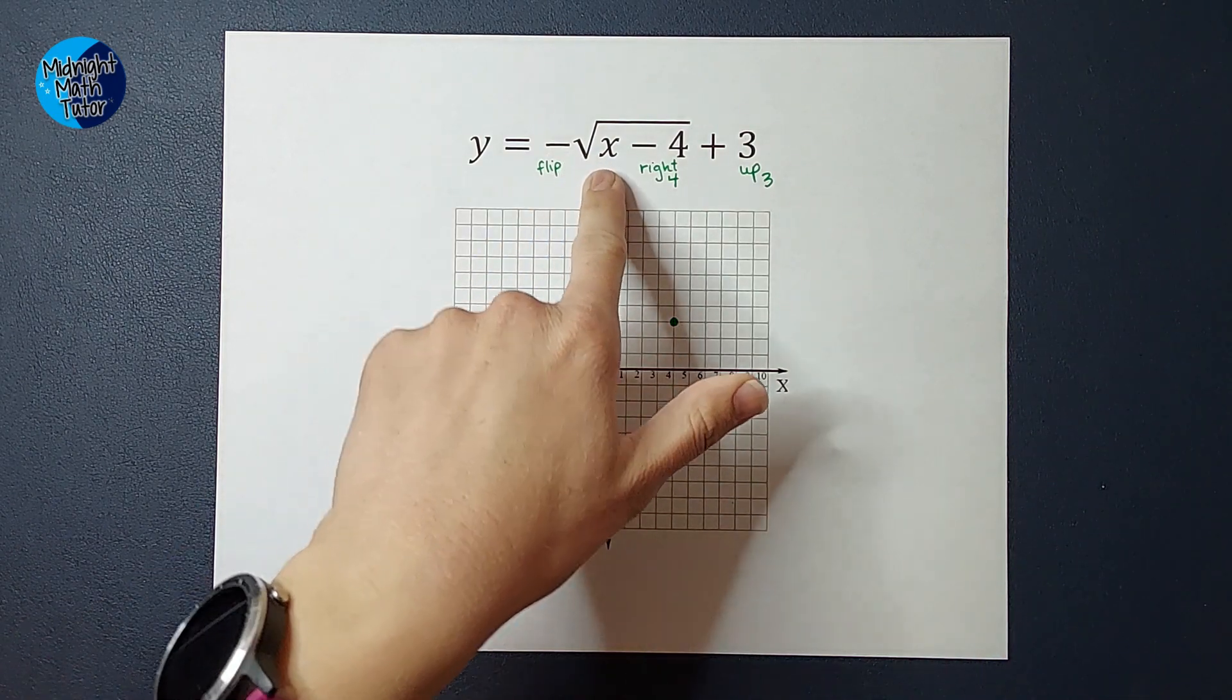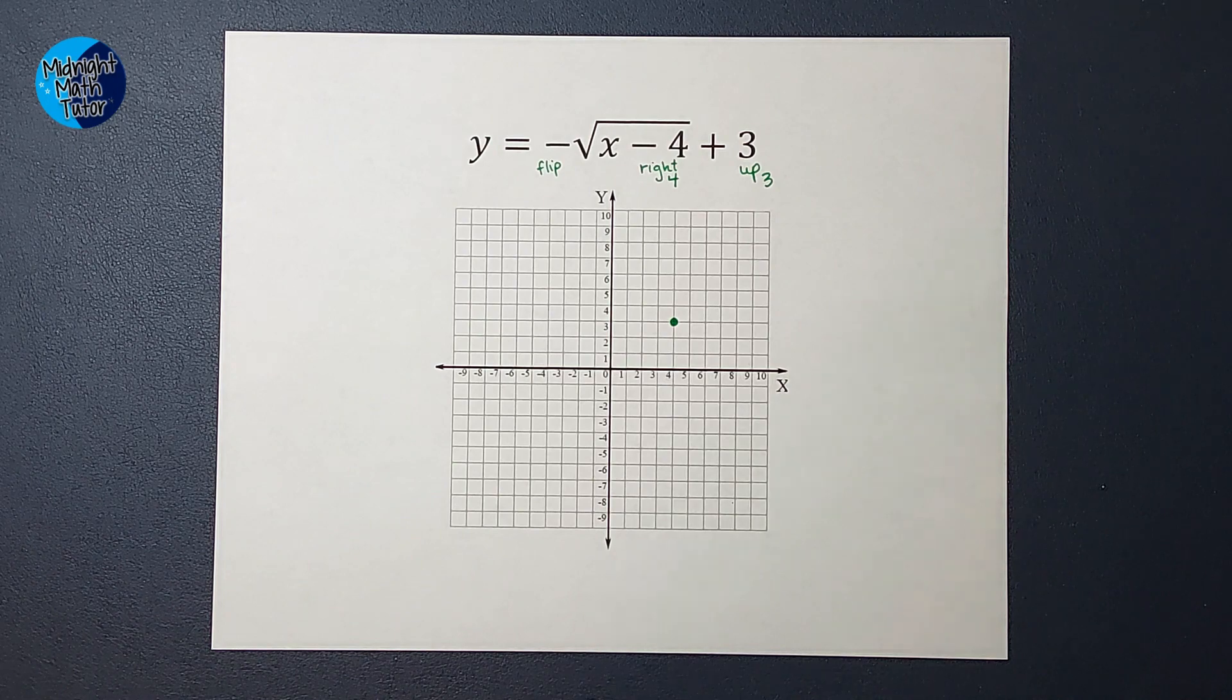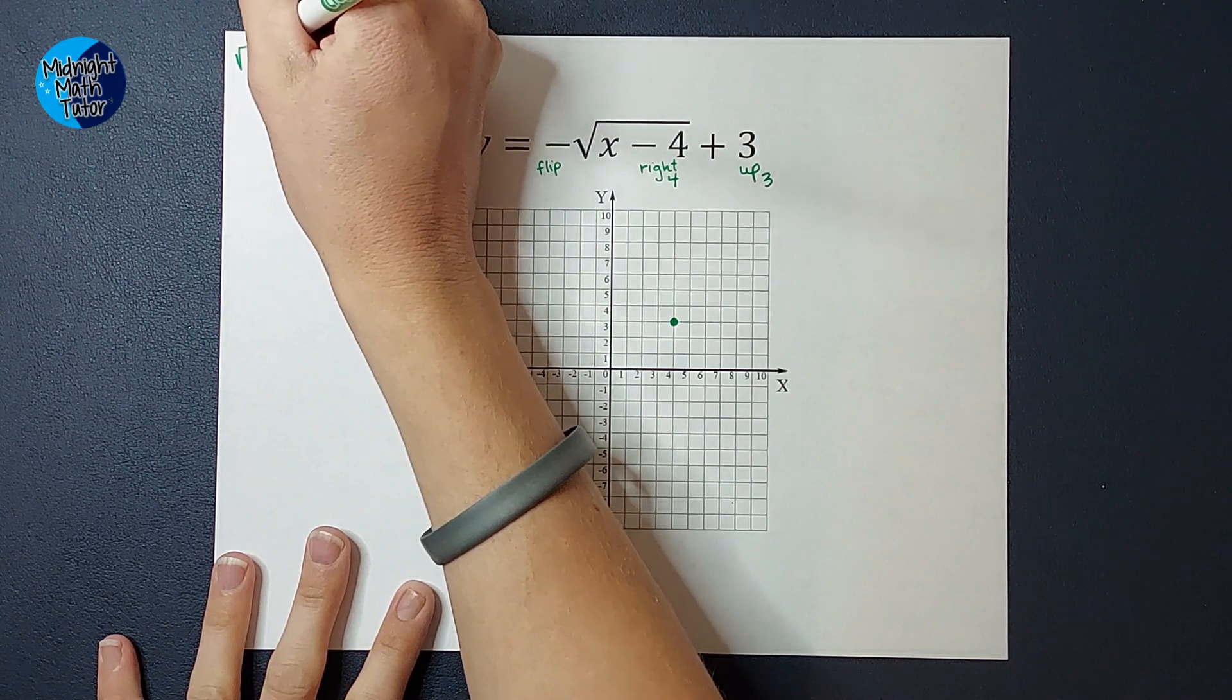Now, with square roots, there's a lot of numbers that don't have a pretty square root, right? Like the square root of 3. Who wants to figure that out? It's not a pretty number. So I'm just going to kind of remind myself of the nice, clean, easy square roots, as I'm plugging these points in.